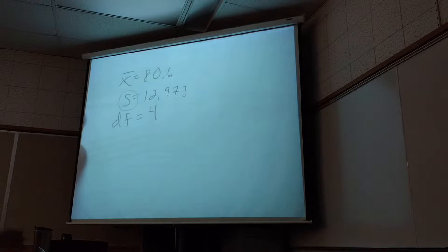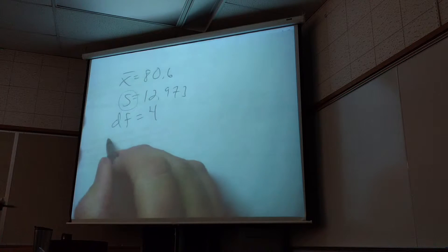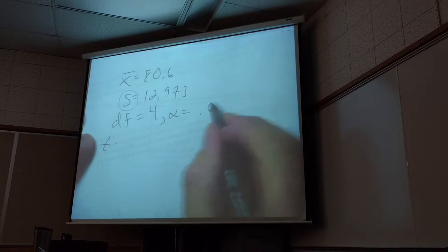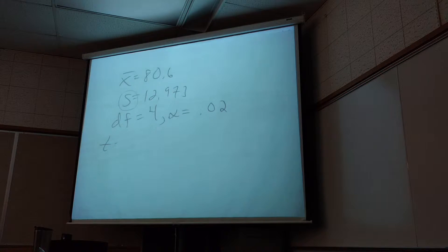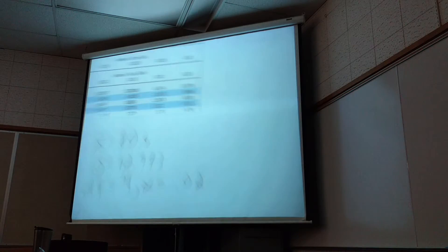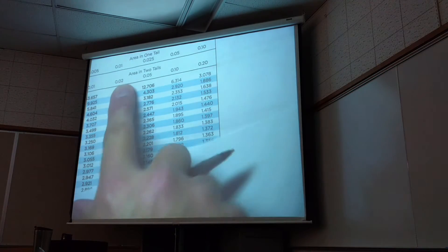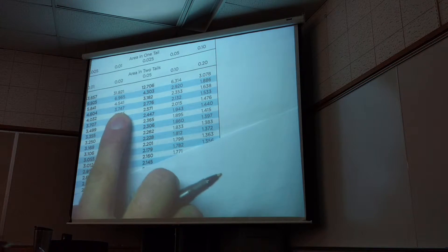I gotta use a T-score. And what's alpha? 0.02, because it's a 98% confidence interval. So if I look that up, 0.02 in two tails, stop at four, I get 3.747.